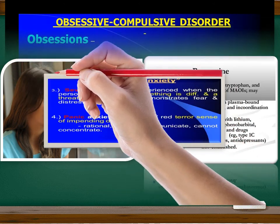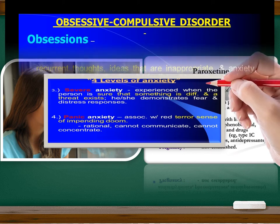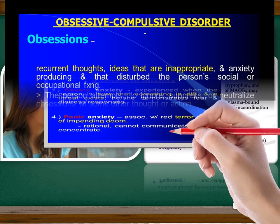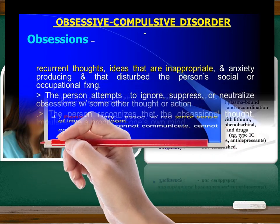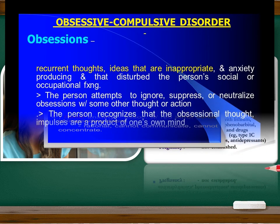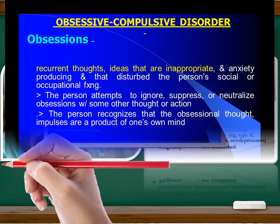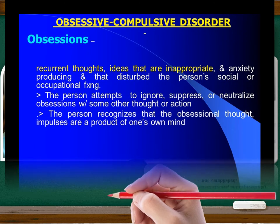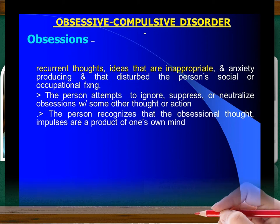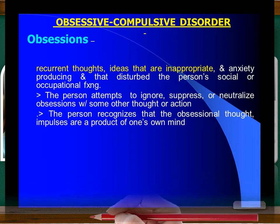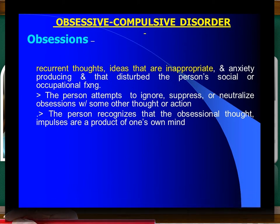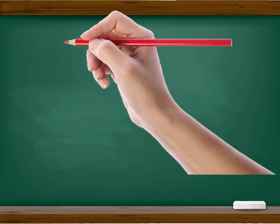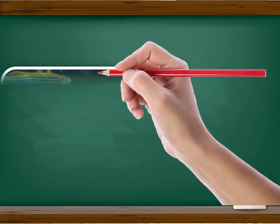Nursing care plan assessment data and objectives: decreased attention span, restlessness, irritability, poor impulse control, feelings of discomfort, apprehension or helplessness, perceptual field deficits, and decreased ability to communicate verbally. Nursing diagnosis: anxiety — a vague, uneasy feeling whose source is often non-specific or unknown to the individual. Goals and objectives: the client will be free of injury, discuss feelings of dread and anxiety, and respond to relaxation techniques with a decreased anxiety level.